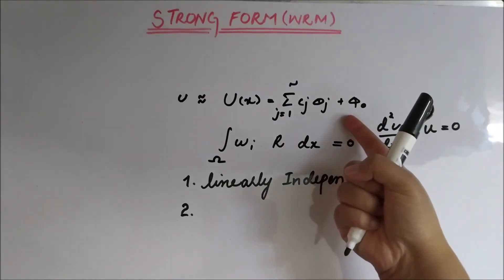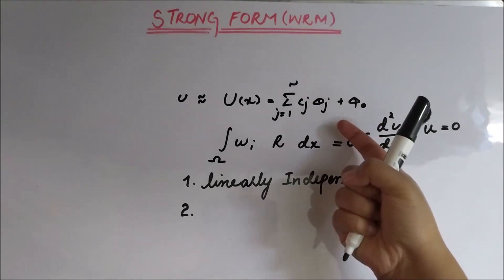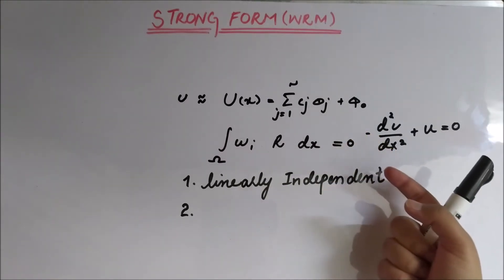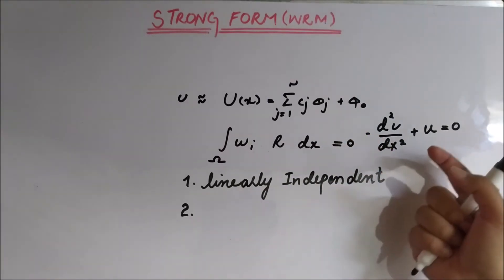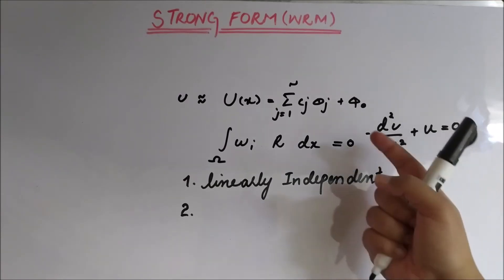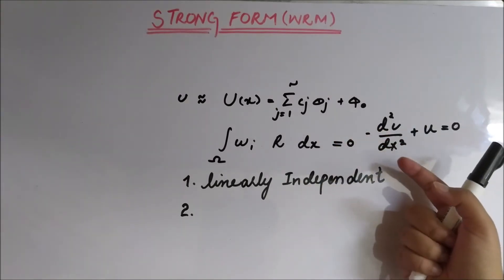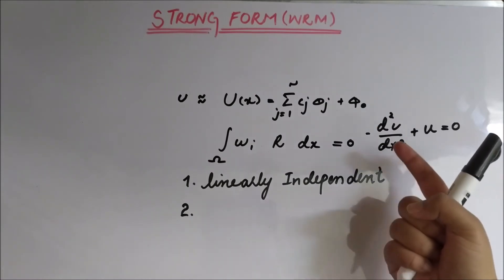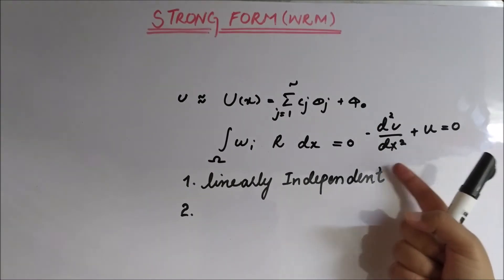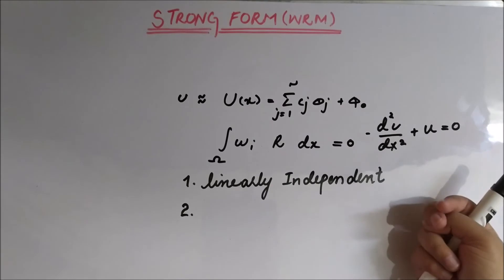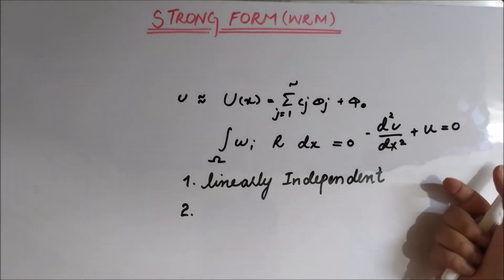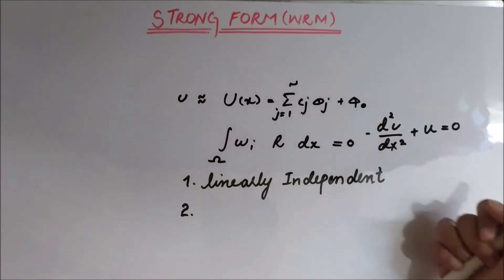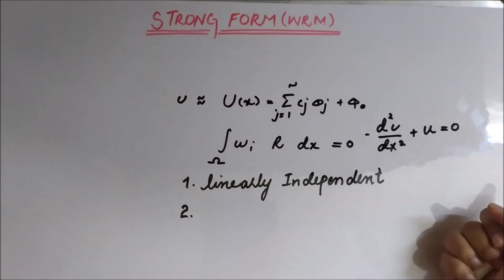But here in the strong form, it should be C2, or second-order differentiable, the same as the differential equation, because we are not doing integration by parts — we are not going to weaken the differentiability or distribute it. That is why the shape functions need to be sufficiently differentiable.